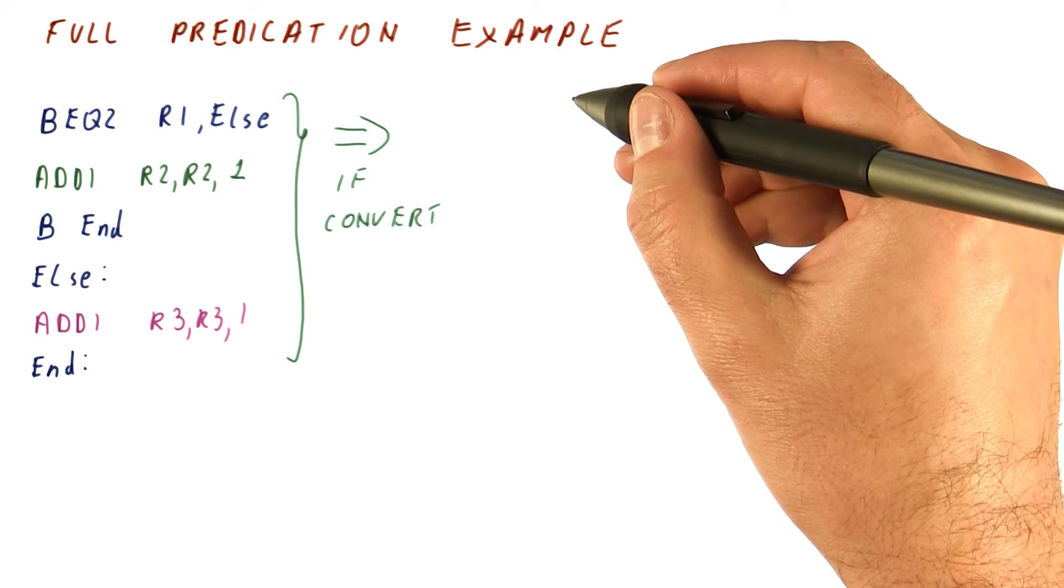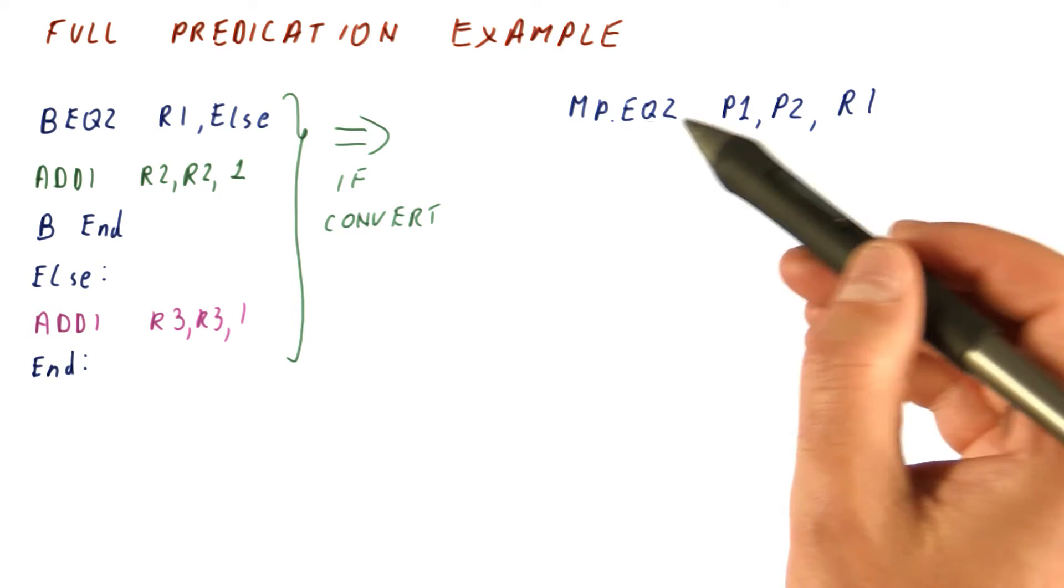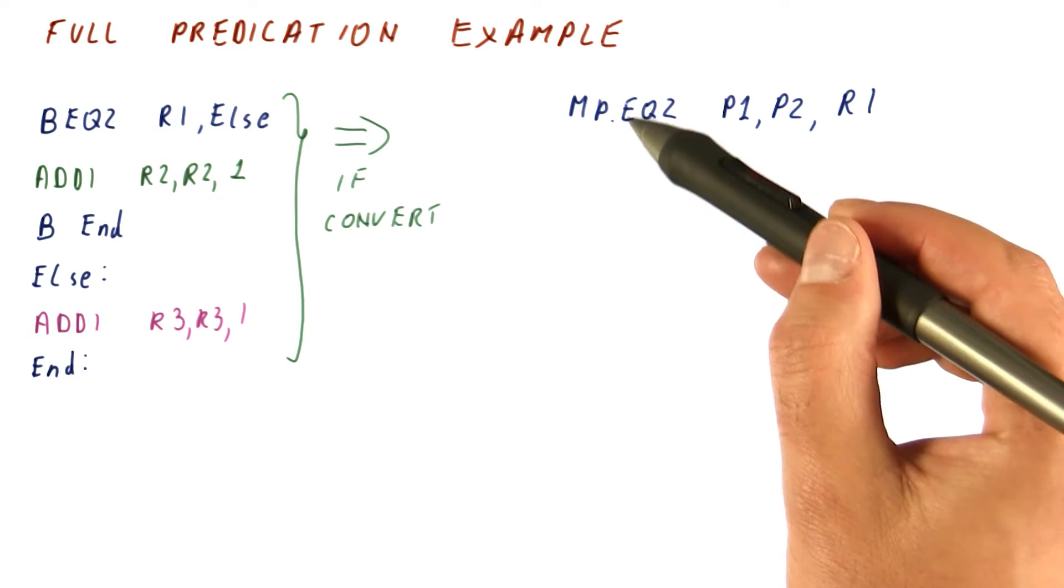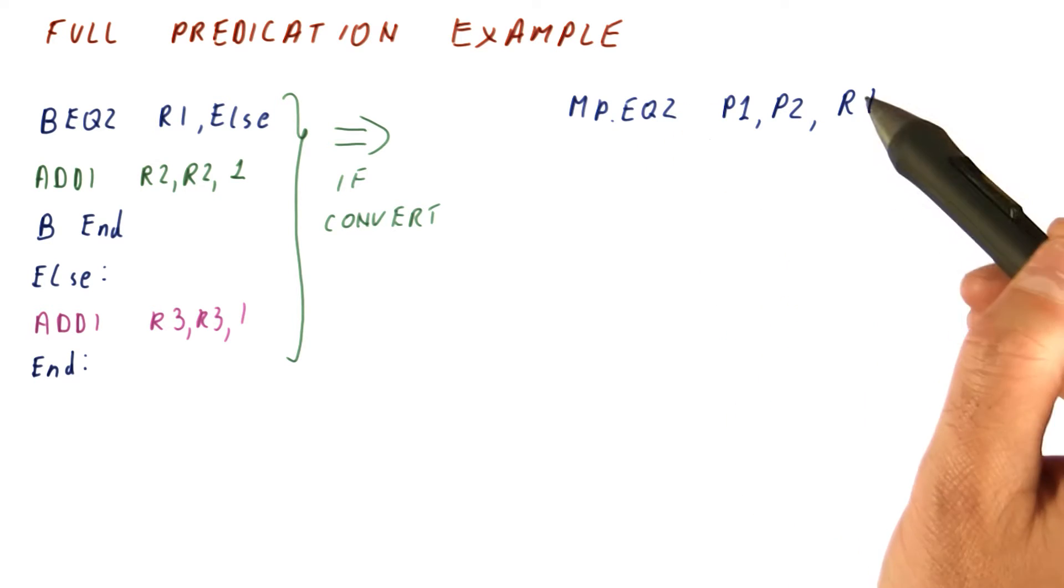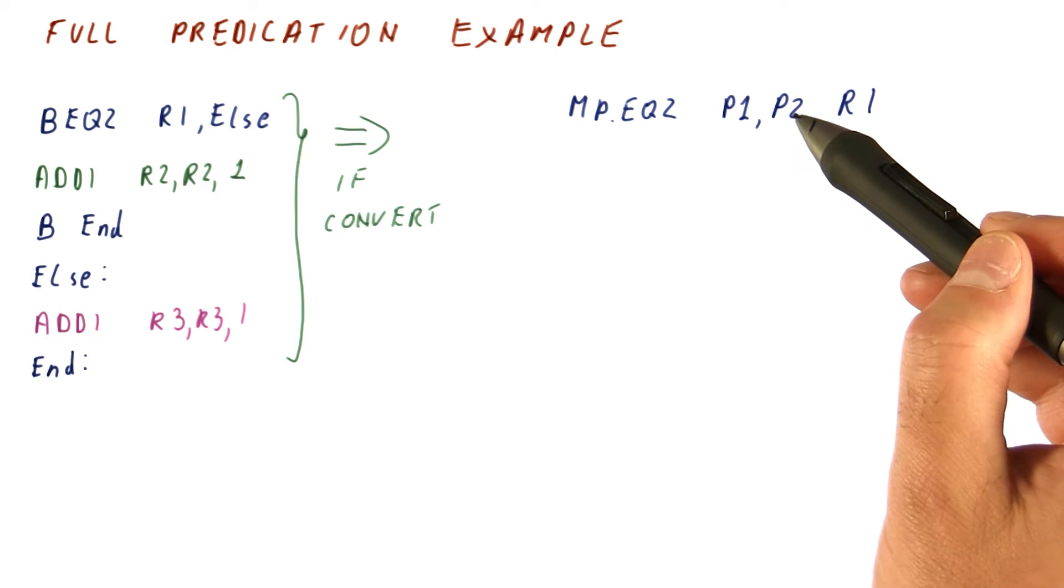With full predication, a la the Itanium, the condition check is done using the predicate set instruction that compares equals 0 on R1 and sets P1 and P2 accordingly.